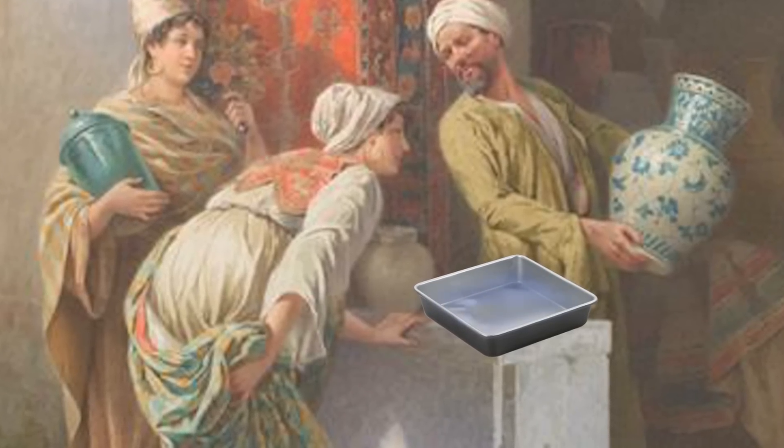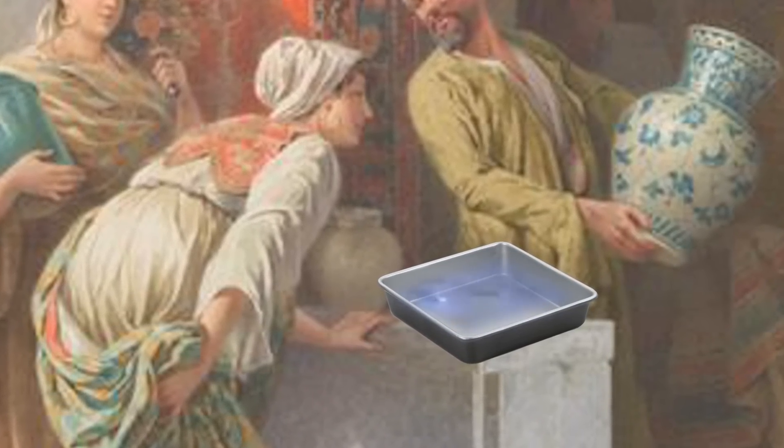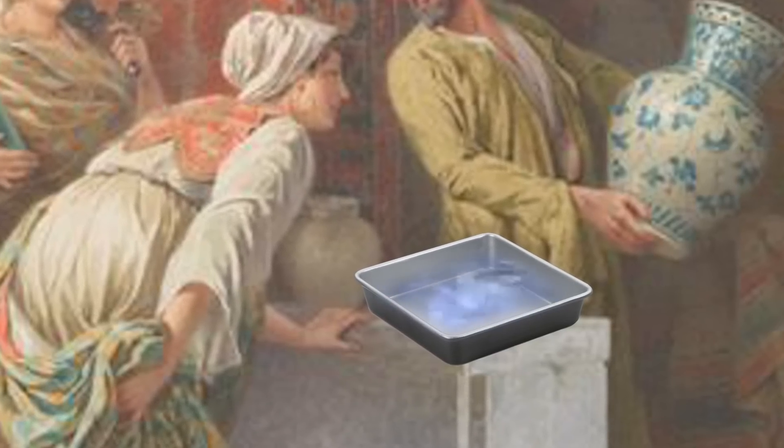Of course, demand creates supply, and it wasn't too long until merchants decided to start selling portable puddles of varying shapes. They would fill various vases and pans with water, some round, some triangular, and some square. And they found that this square shape sold the best.